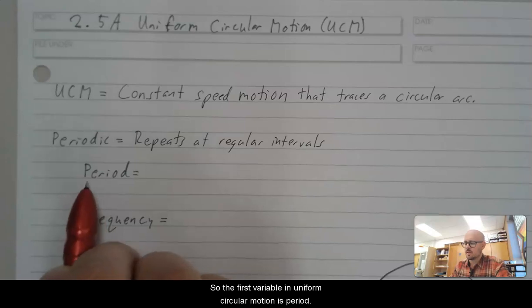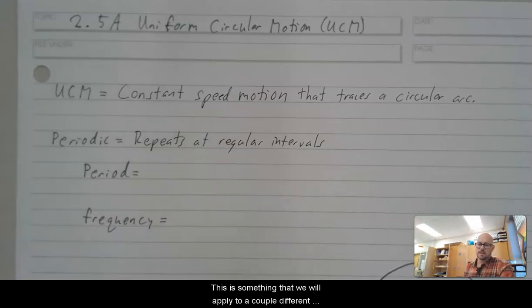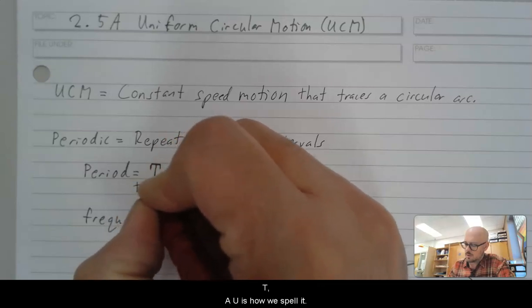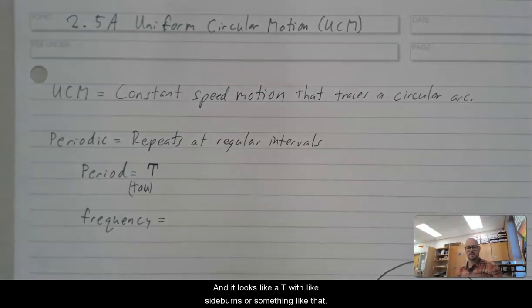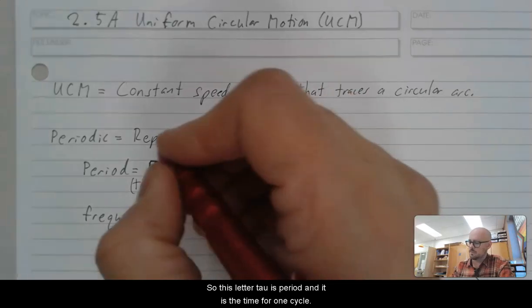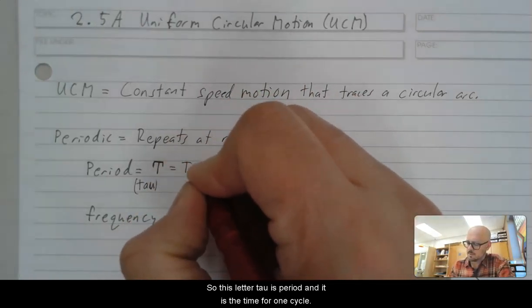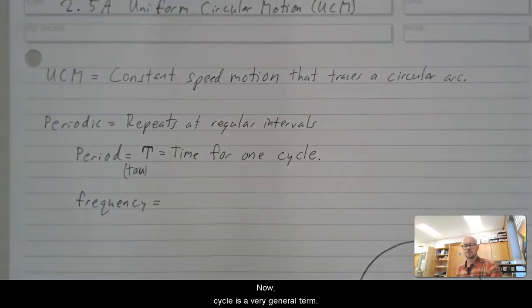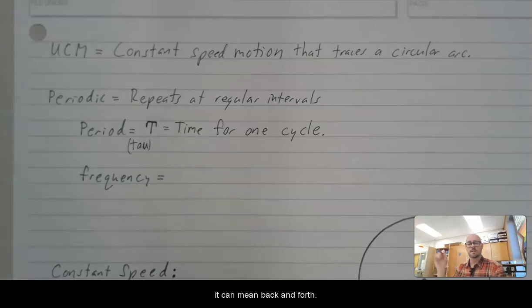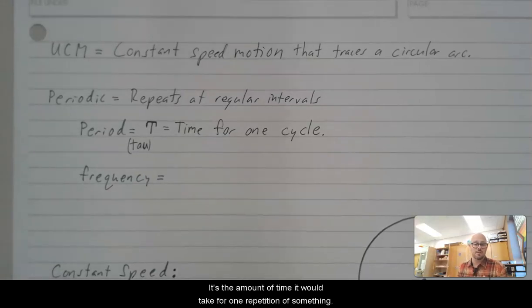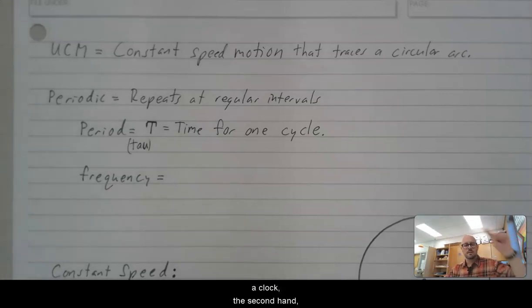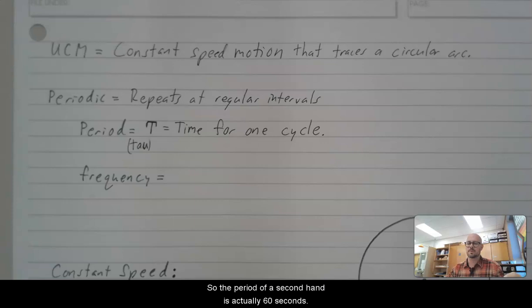So the first variable in uniform circular motion is period. This is something that we will apply to a couple different types of motion. The variable for period is the Greek letter tau, T-A-U is how we spell it. And it looks like a T with sideburns or anything like that. So this letter tau is period. And it is the time for one cycle. Now, cycle is a very general term. It can mean a trip around in a circle. It can mean back and forth. It's the amount of time it would take for one repetition of something. If you think about like a clock, the second hand, one cycle of a second hand is one minute. So the period of a second hand is actually 60 seconds. It takes 60 seconds to go all the way around.